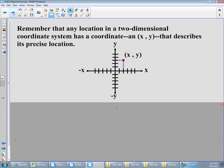A little bit of basic review here. Remember that any location in a two-dimensional coordinate system has a coordinate—an (x, y)—that describes its precise location. The graph that you see there before you is called the Cartesian coordinate plane. Please notice that the x axis is the axis that goes left and right, the horizontal one, and the y axis is the vertical.